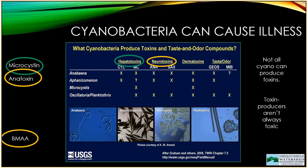Interestingly, not all cyanobacteria can produce toxins — they may not have the genes to produce microcystin, and that can vary within the genus. There are some species of Microcystis that can produce microcystin and others that cannot. It's not possible to tell by looking at a cyanobacteria, either with a microscope or with your eyes, whether or not toxins are present. Even if a cyanobacteria does have the gene to produce a toxin, it doesn't always produce that toxin. We don't know why. Because we can't predict when toxins might be present, we recommend everyone avoid contact with cyanobacteria.